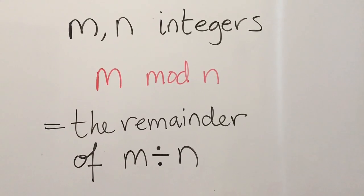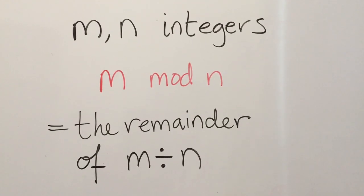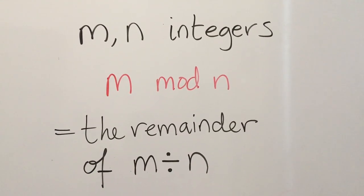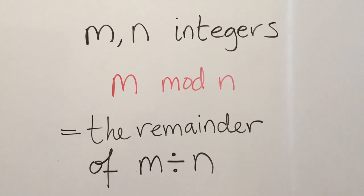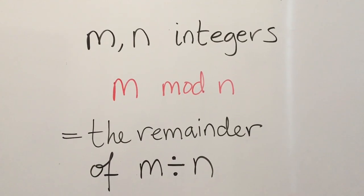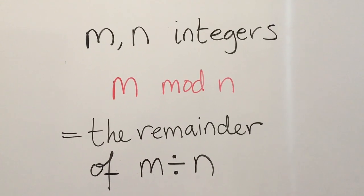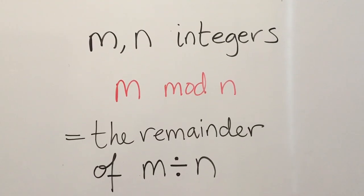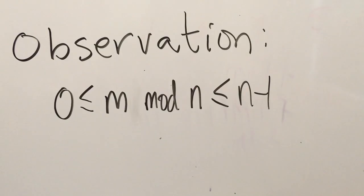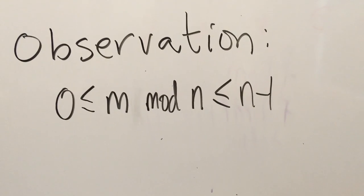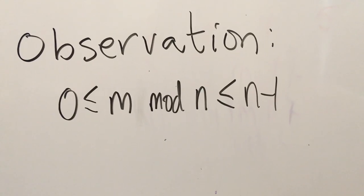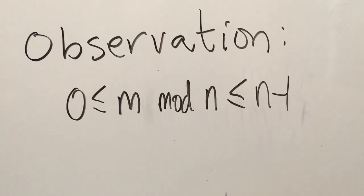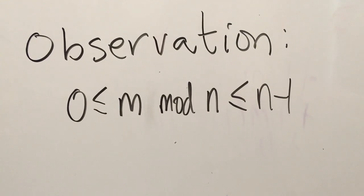Here's the first piece of notation I want to introduce: the mod operator. Mod is short for modular. If m and n are integers, we say m mod n is the remainder when you do m divided by n. You may have to dig back into your elementary education and recall that when you divide two numbers, you'll always have a remainder. Sometimes the remainder is zero, like when m is divisible by n. But you always get some integer, and your remainder always has to sit between zero and n minus one.